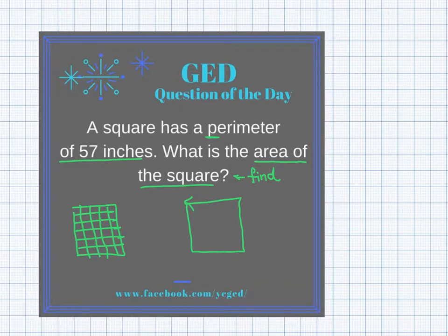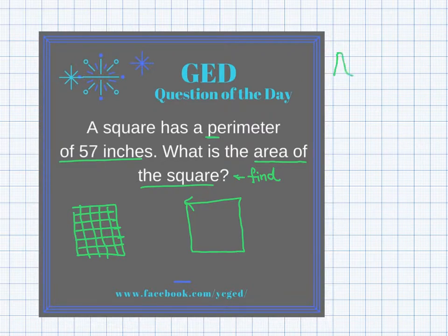The great news is that if you're ever looking to find the area, the GED formula sheet has area formulas on it for a few shapes. To find the area of a square, we would plug into this formula: a equals s squared. Sounds simple enough, but here's where a ton of students go wrong.